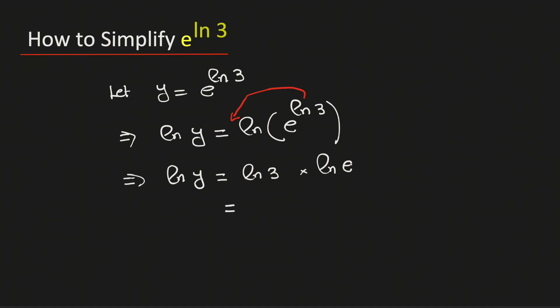But we know that ln of e is equal to 1. So we have ln of 3 here and in the left hand side we have ln of y. So see that y is equal to 3.